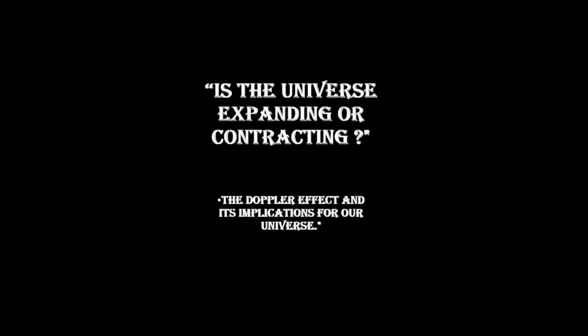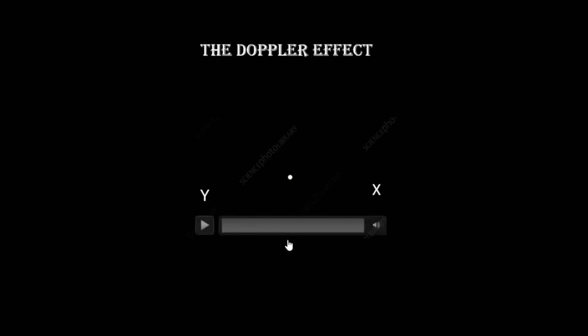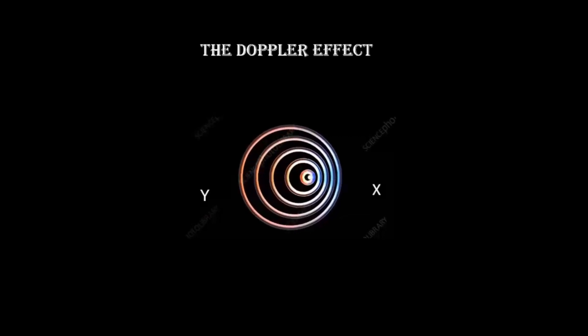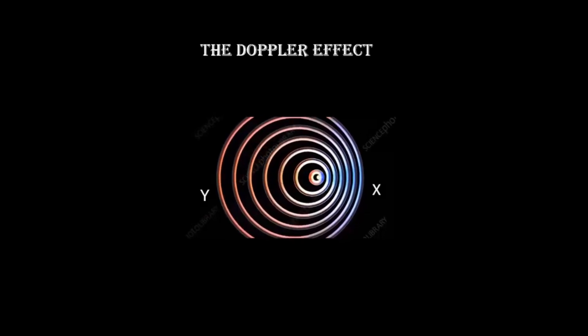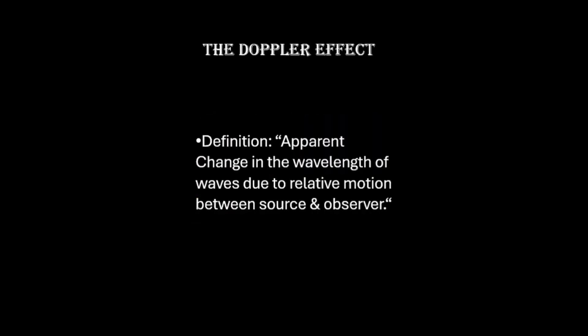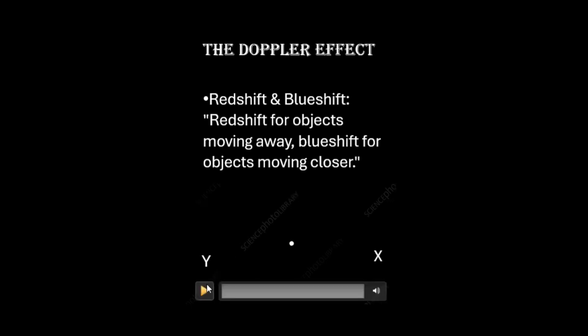Let's observe two observers X and Y and a source of light that is moving towards X. For observer X, the wavelength is contracting, and for observer Y, the wavelength is expanding. This apparent shift in the wavelength of light due to the relative motion between source and observer is called Doppler's effect, and this effect is different for both observers.